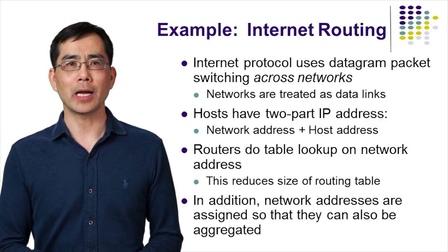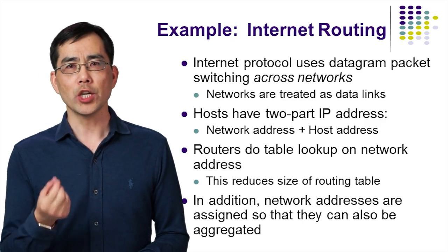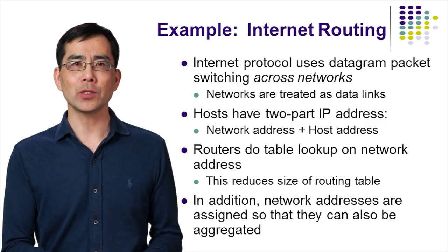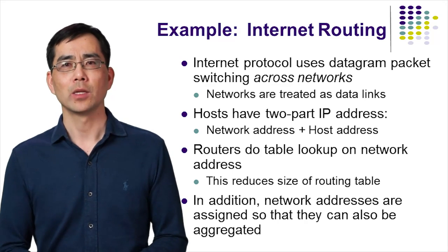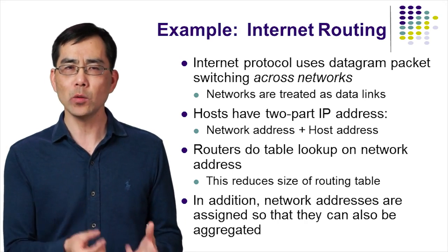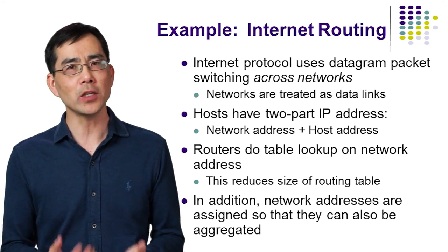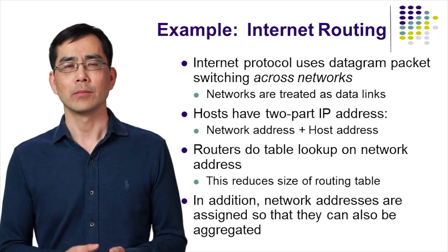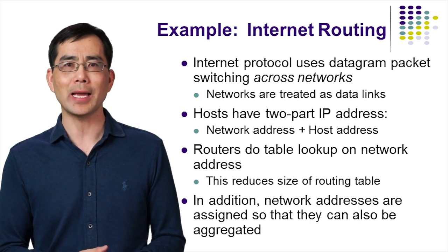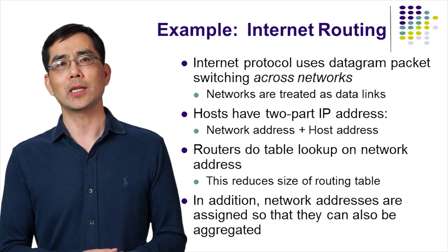For example, Internet Protocol (IP) uses datagram packet switching across networks. Each host has a two-part IP address: network address plus host address. Routers do table lookup based on network address only, which reduces the size of routing tables significantly. Network addresses can be assigned so that they can also be aggregated, which can further reduce the routing table size.